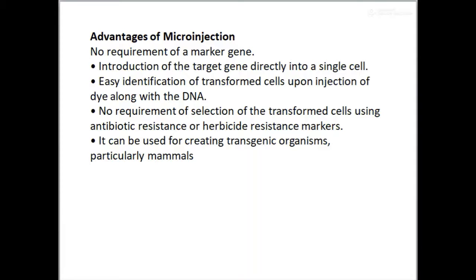Microinjection has several advantages: no requirement for a marker gene, direct introduction of the target gene into a single cell, and easy identification of transformed cells by injecting a dye along with the DNA. No requirement for selection using antibiotic resistance or herbicide resistance markers is needed, unlike with vectors. Microinjection can be used for creating transgenic organisms, especially mammals.